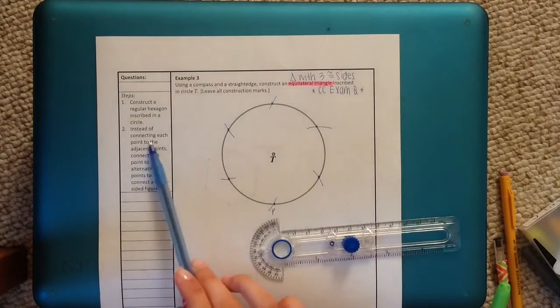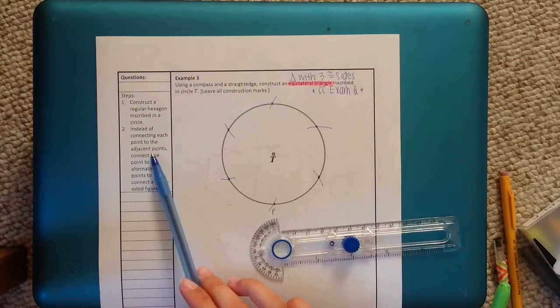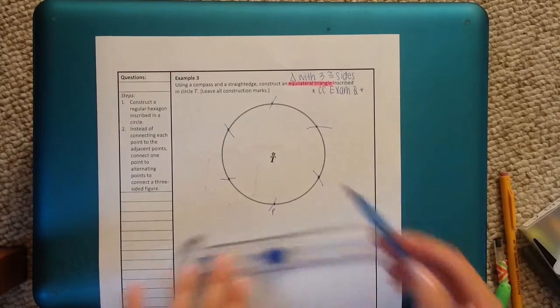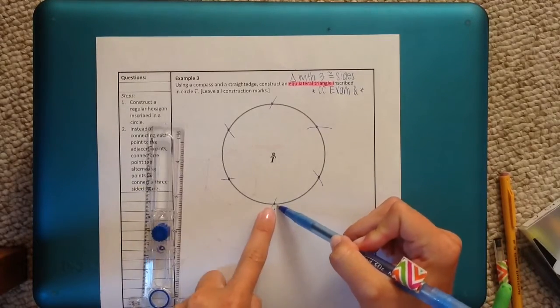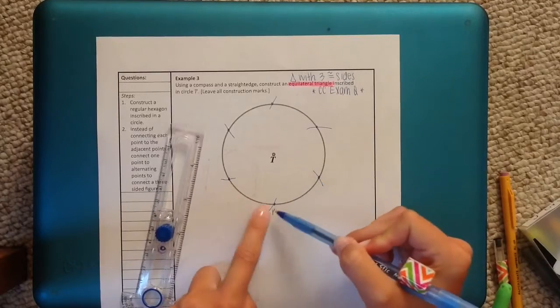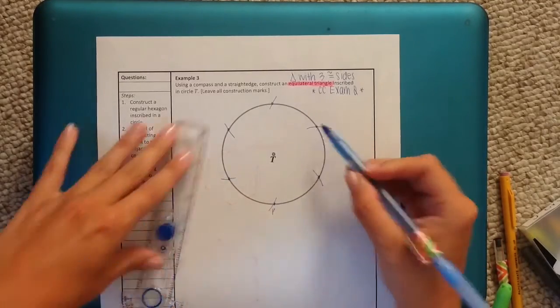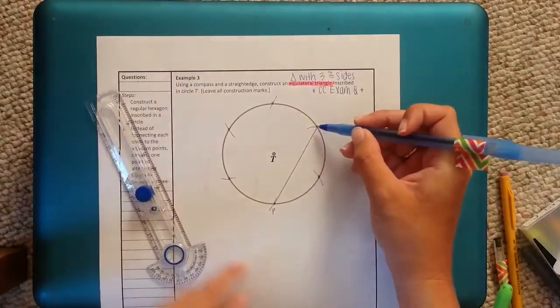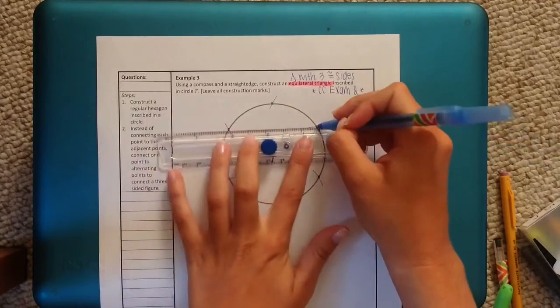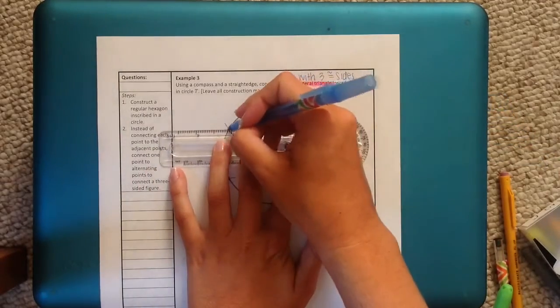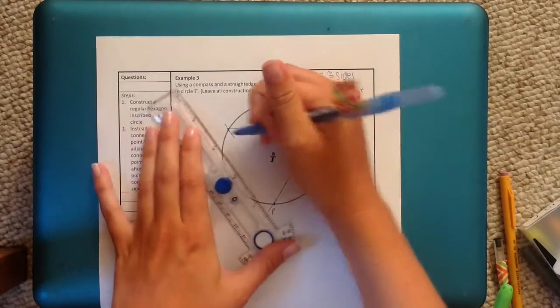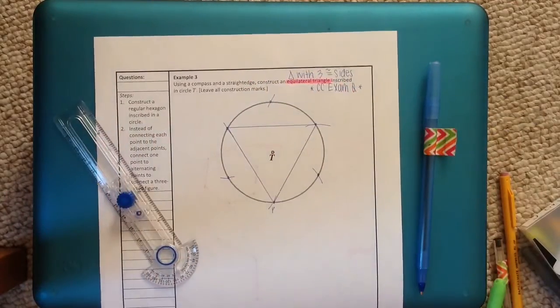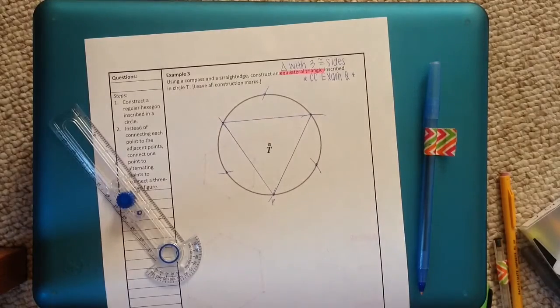So now step two says, instead of connecting each point to the adjacent points, connect one point to alternating points to connect a three-sided figure. So if I start at point P, I don't want to go to either one right next to it. I want to go every other. So skip one, connect. And then from here, I'm going to skip one and then connect. And from there, skip one, connect, and I hit P. Now, you could have also done the other three points. It wouldn't have mattered. You still would have gotten full credit.